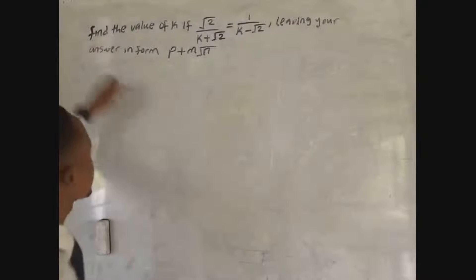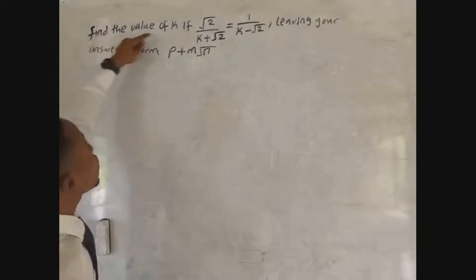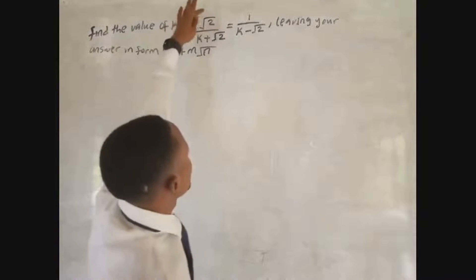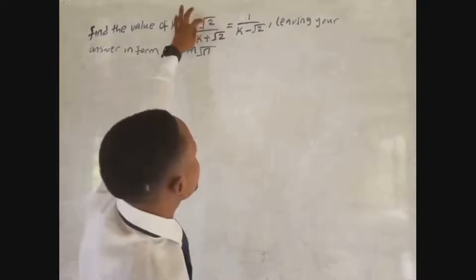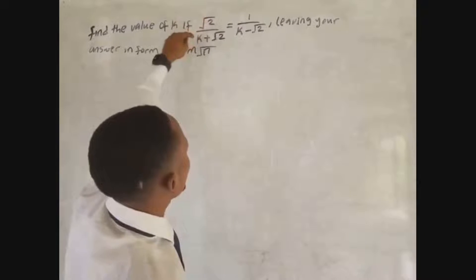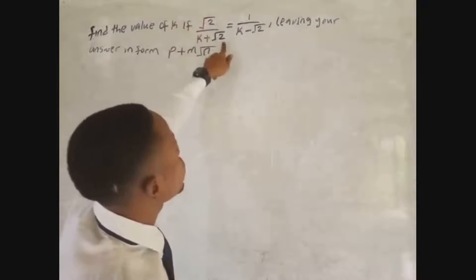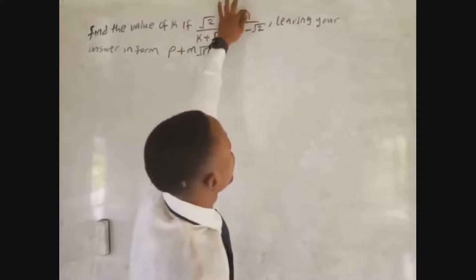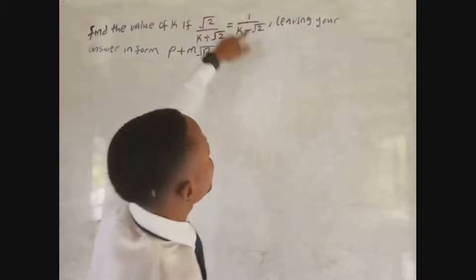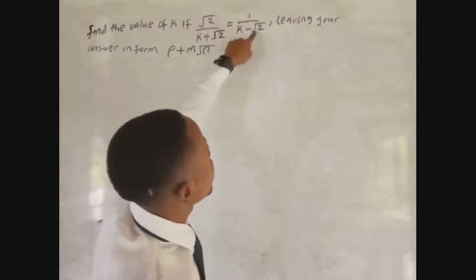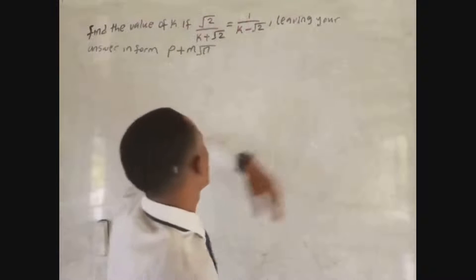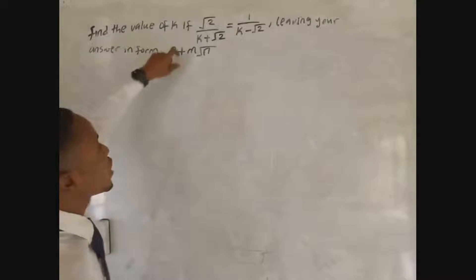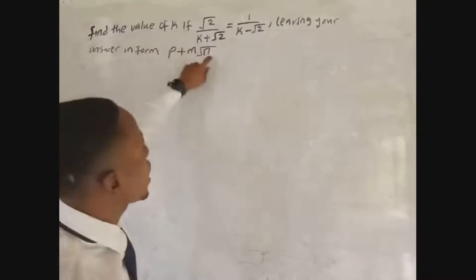The question says: find the value of k, if we have √2 over (k + √2) equals 1 over (k − √2). Leave your answer in the form p + n√2.